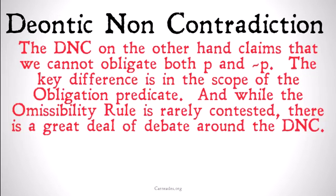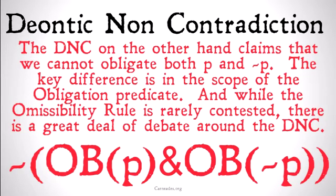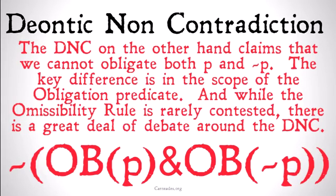While the omissibility rule is rarely contested, there's actually a great deal of debate around the deontic non-contradiction axiom, because you may end up in a situation where you have two separate conflicting obligations, and people might argue that such situations should be admitted into our deontic logic. However, the omissibility rule, where you just are obligating a contradiction at face value, is going to be problematic because few people are going to say that we need to obligate contradictions flat out, since you can't really obligate something that is impossible to do. But there might be situations where you might have one obligation as well as another separate obligation.